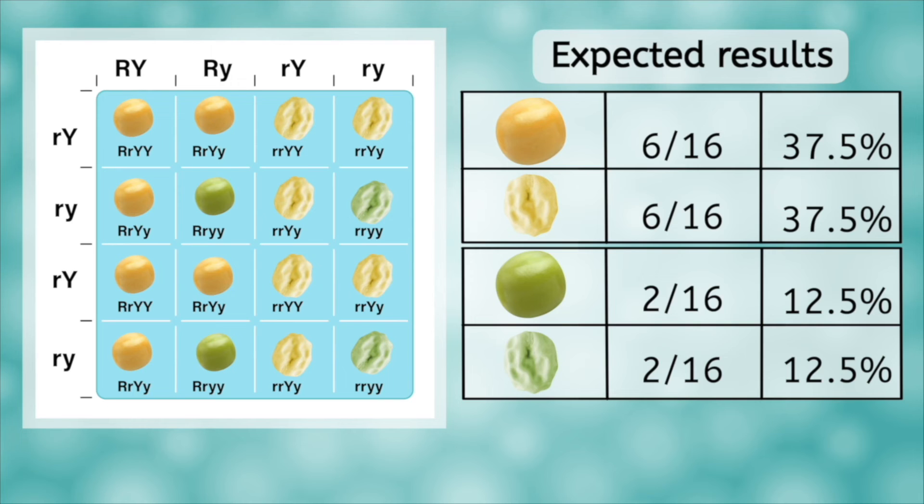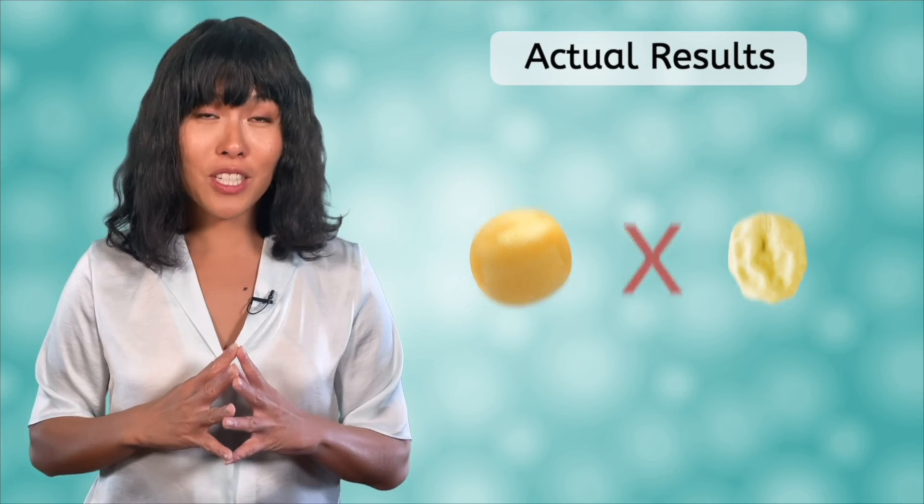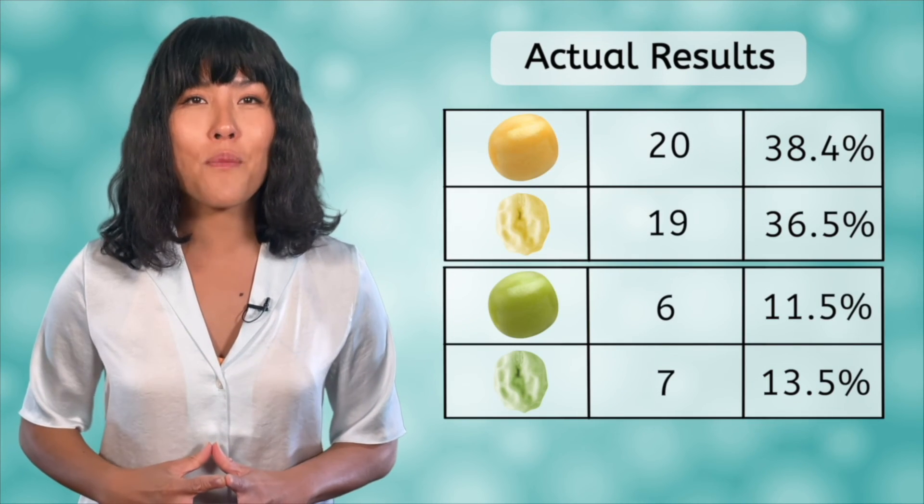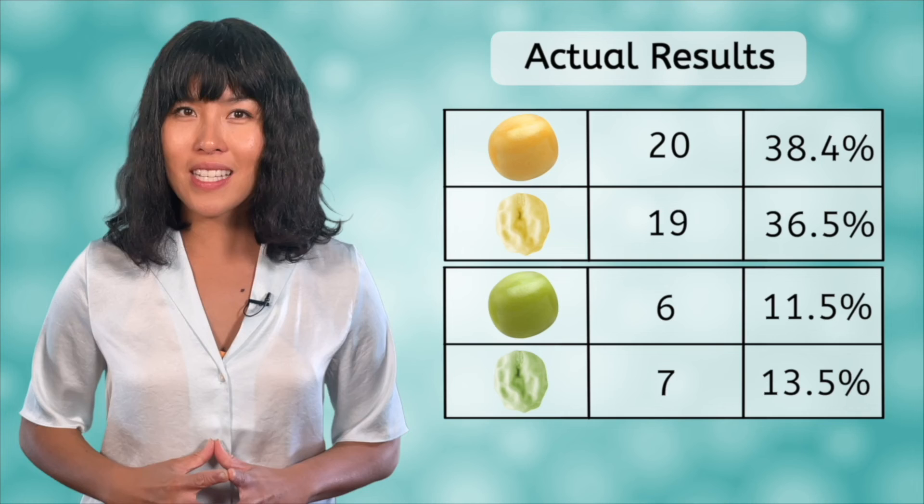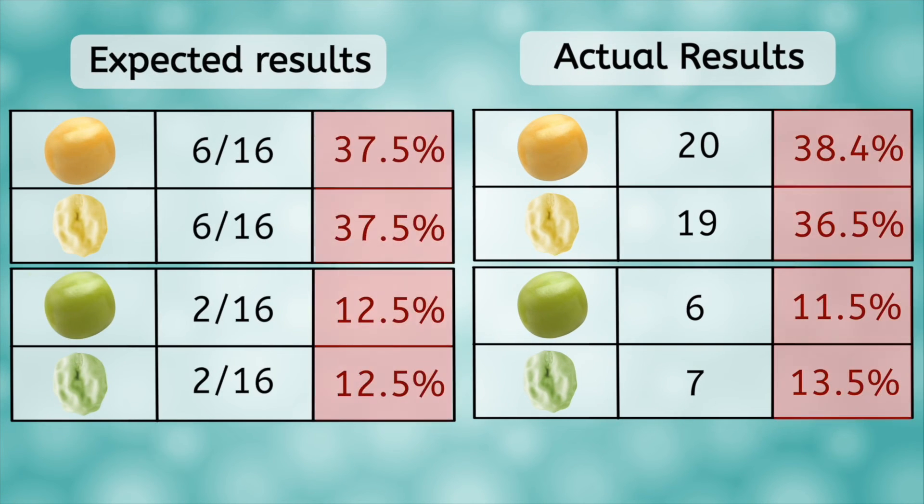We divide our fractions to make percentages. These percentages represent what we would expect to see in any set of offspring. So what results were actually found when these two plants were crossed? They produced a total of 52 seeds in the following combinations. Let's compare this to the percentages we expected. As you can see, our plants produced offspring in almost the exact percentages that we would have expected. A little variation is almost always seen. But in general, the trends we calculated from our Punnett square were a very good prediction for what would actually happen.